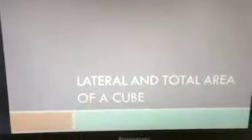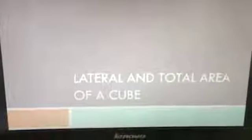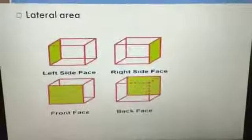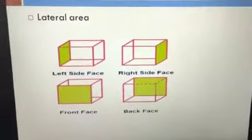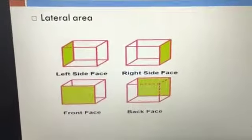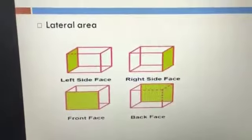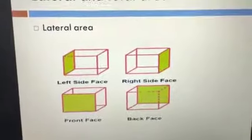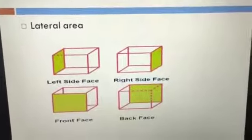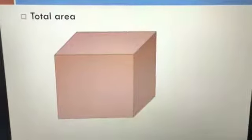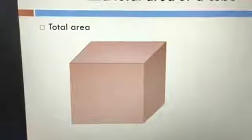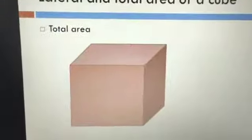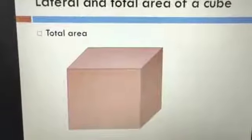Our lesson today is lateral and total area of a cube. Lateral area means we take only four faces of the cube: the left, the right, the front, and the back face — we do not take the top face and the bottom face. But for total area, we take all the faces. A cube has six faces, all in the shape of squares.